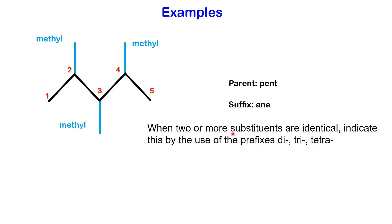Finally, assemble the name. When there are two or more identical substituents, denote this using prefixes like di, tri, tetra, and so on. Ensure each substituent is assigned a corresponding number and use commas to separate numbers from each other. The name for this molecule is 2,3,4-trimethyl pentane.